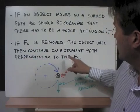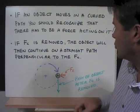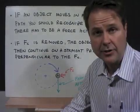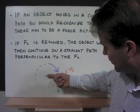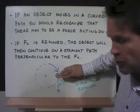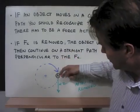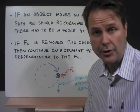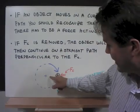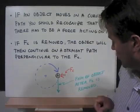If the centripetal force is removed, the object will then continue on a straight path perpendicular to the centripetal force. So I have this centripetal force directed towards the center of the circular path, but if I was able to shut it off somehow, then the object will travel at a tangent to the circular path or at a right angle to the centripetal force.